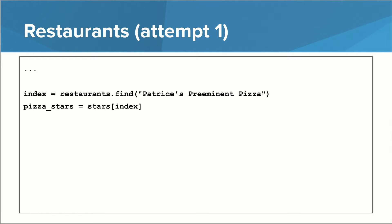Whenever we need the number of stars for a particular restaurant, we have to use the find method to figure out at which index that restaurant lives, and then use that index in the stars list to get its number of stars. This solution isn't great. It's kind of a pain to keep two lists around, and it would be really bad if they somehow got out of sync with each other.